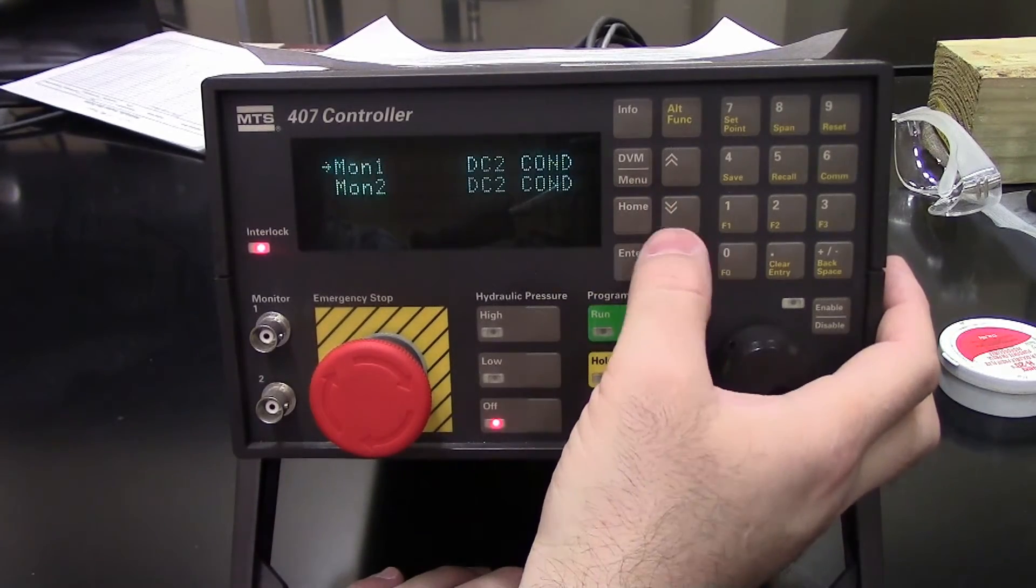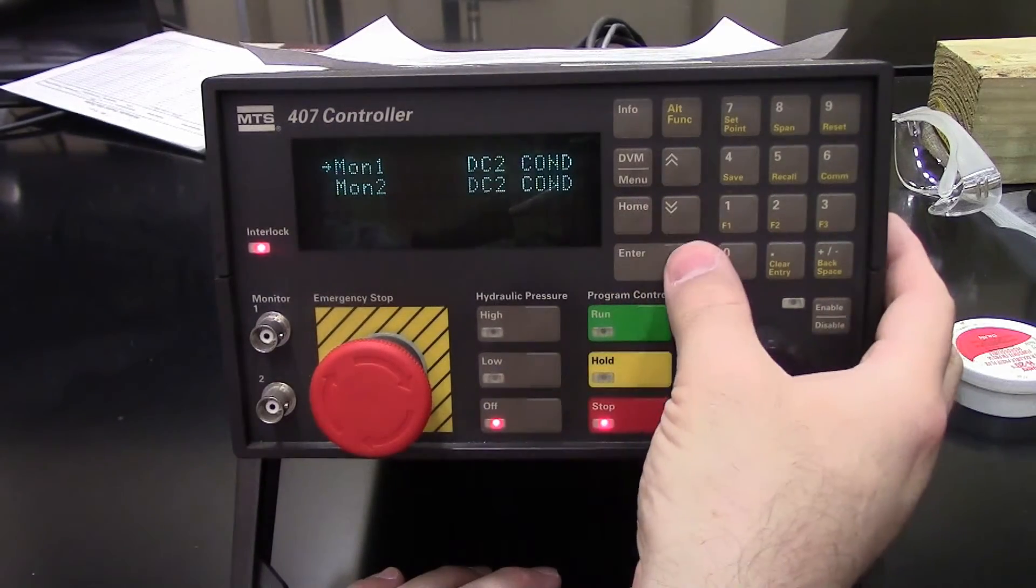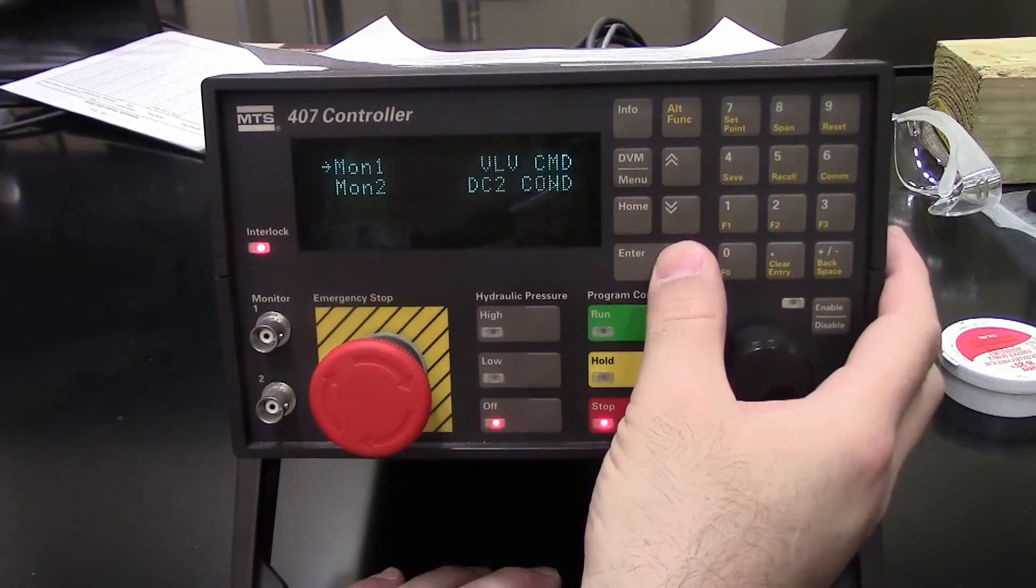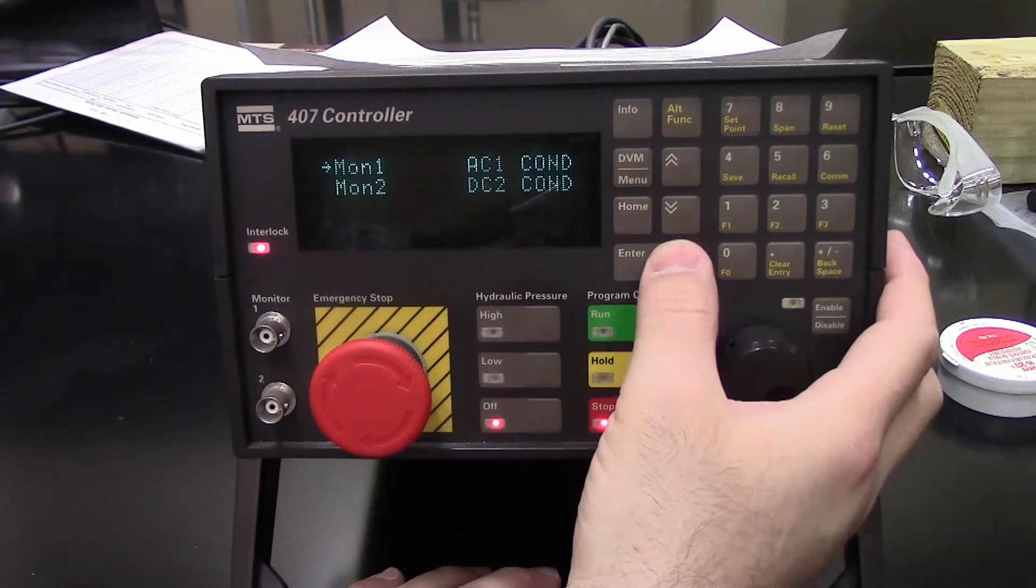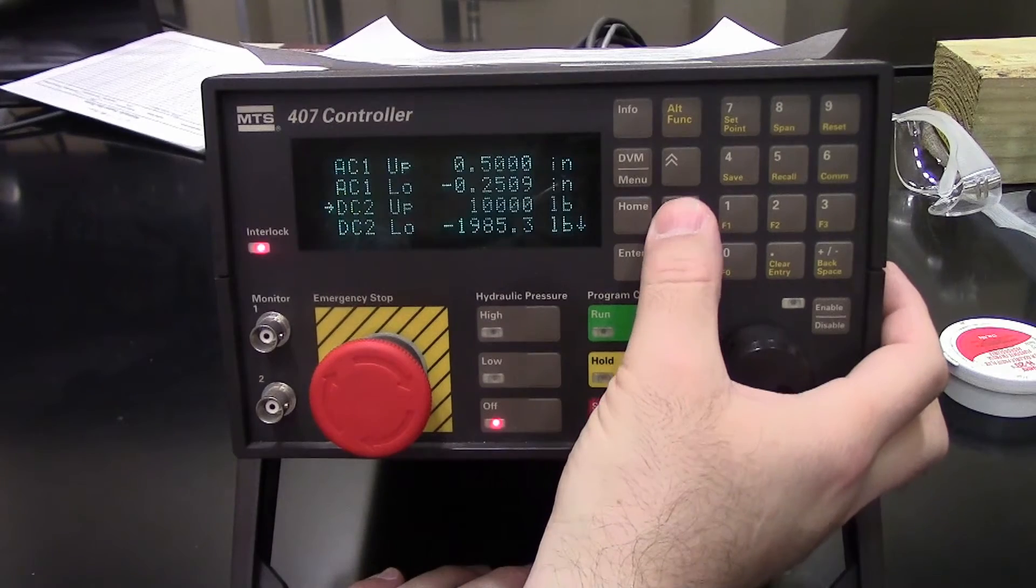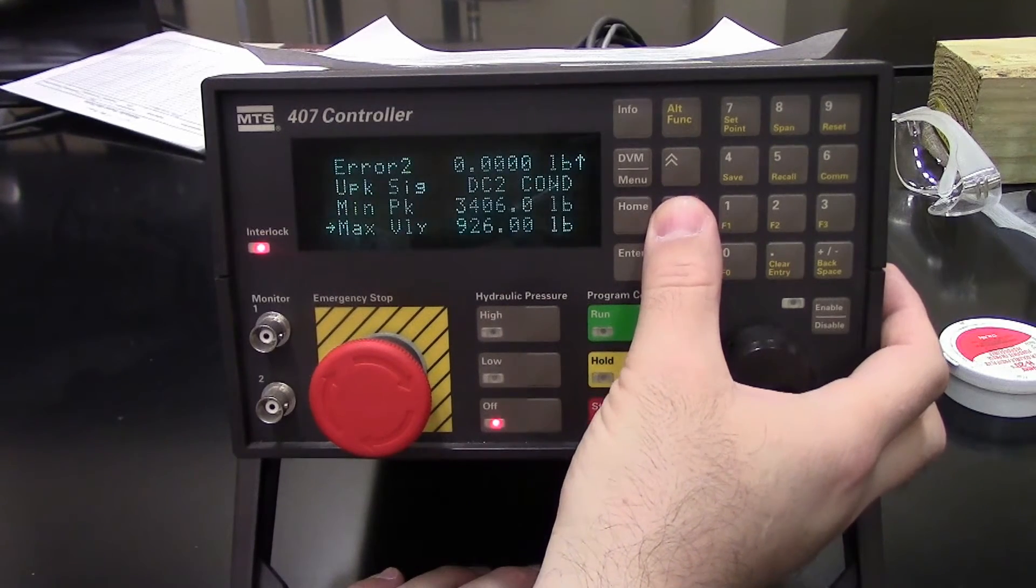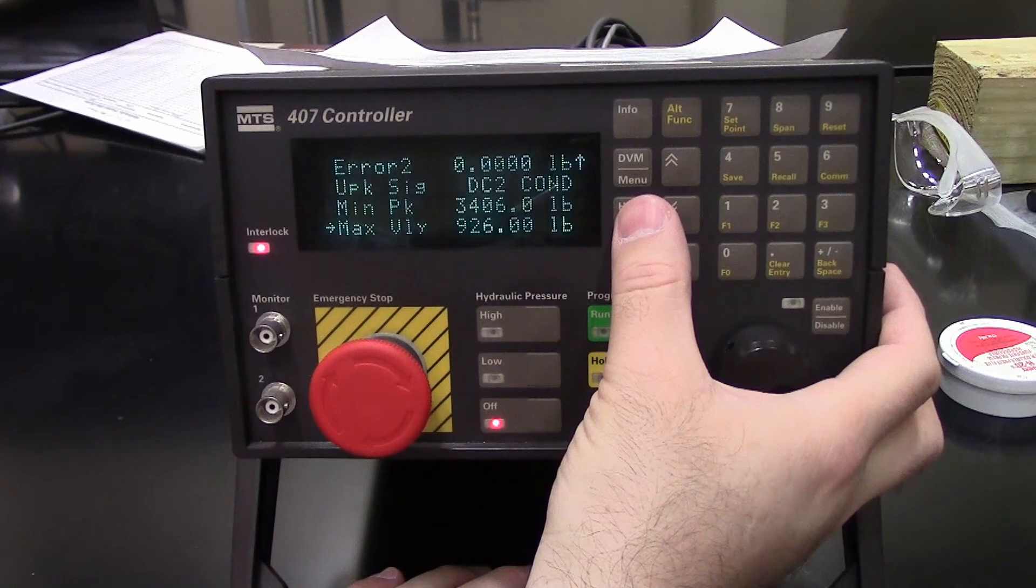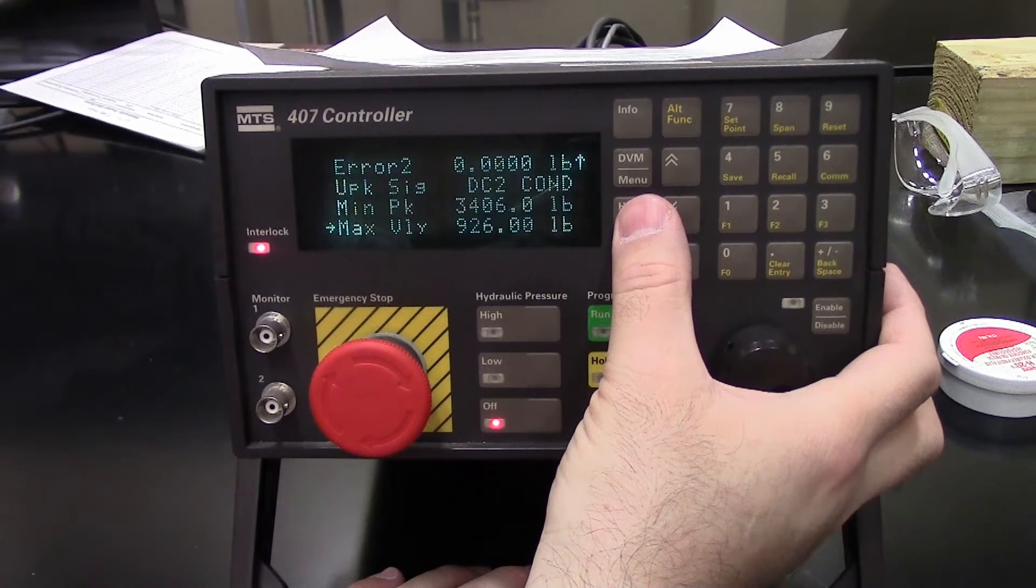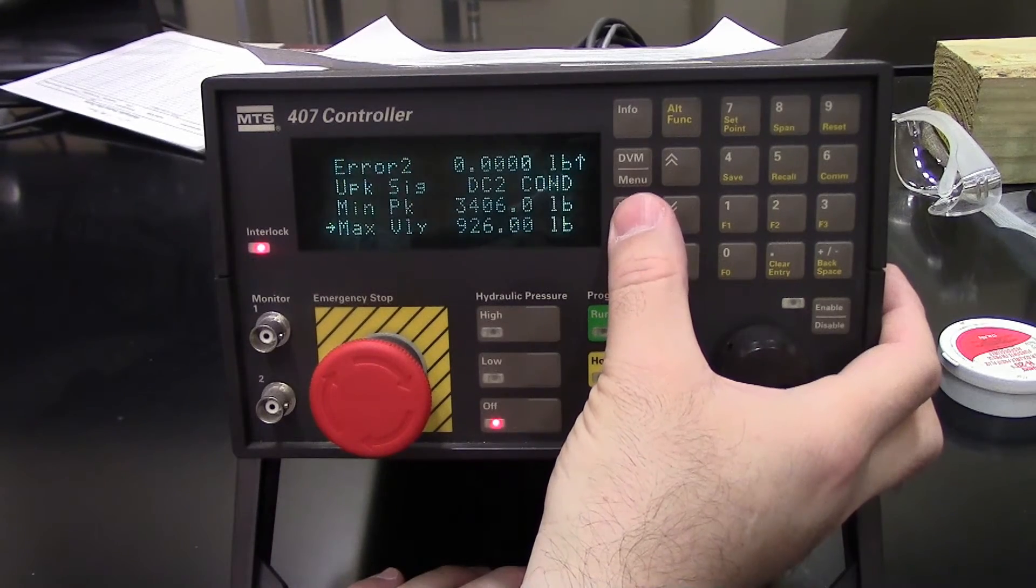Monitor select. This is where you can select the outputs for the B and C connections. Command signal, error signal, and so forth. Limit levels. Those would depend on your test. Minimum peak and maximum value depend on whether or not you have amplitude control installed.